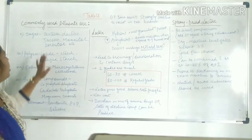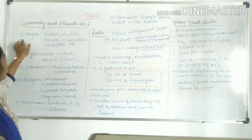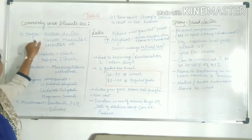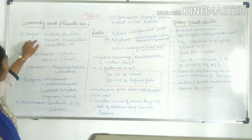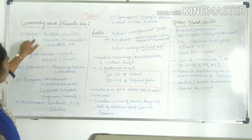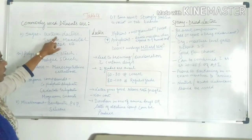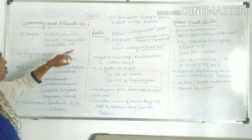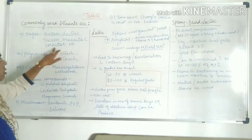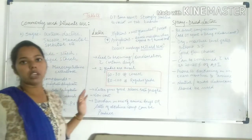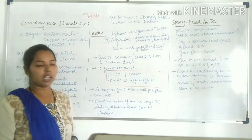So which are the commonly used diluents? First of all, sugar. In this category of sugar, generally dextrose, lactose, sucrose, mannitol, and sorbitol are used as sugar-based diluents.